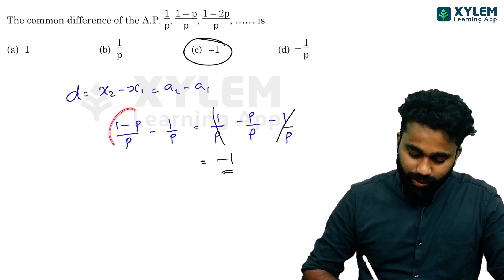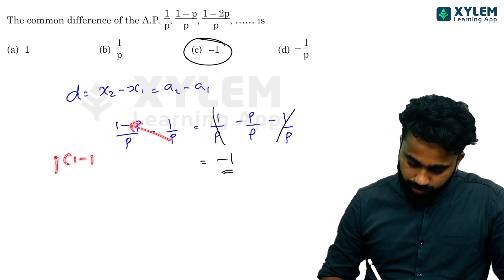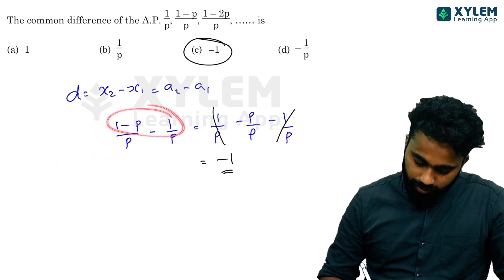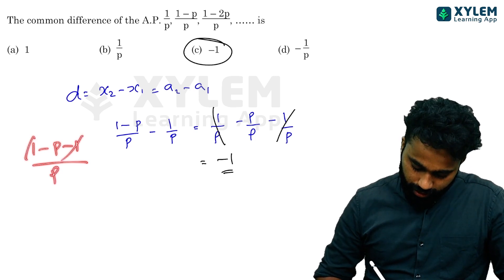Alternative method: p times 1 minus p minus 1 divided by denominator p gives 1 minus p minus 1 equals minus p over p equals minus 1.